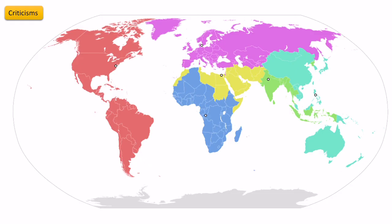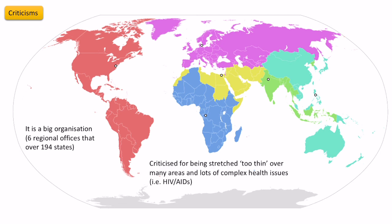A further criticism is that WHO is a huge global organization spanning 194 member states, and is therefore often criticized for being stretched too thinly across those areas while trying to deal with complex health issues like HIV and AIDS, meaning it cannot be as effective as it wants to be.